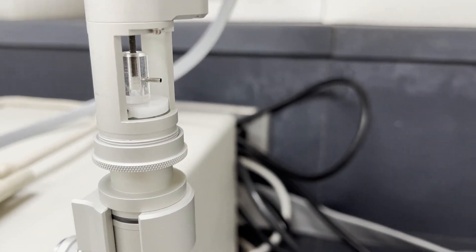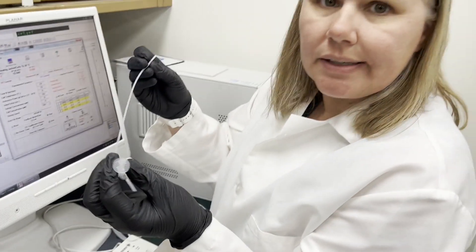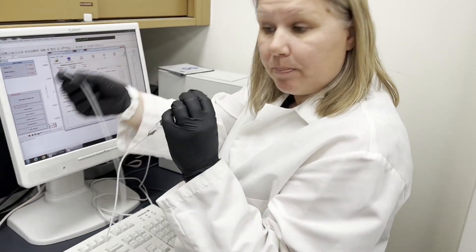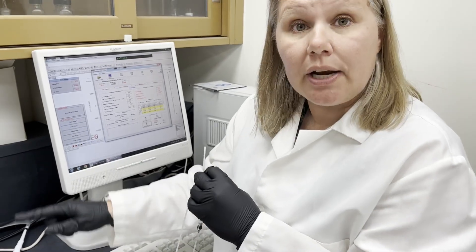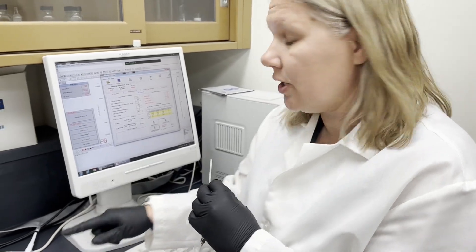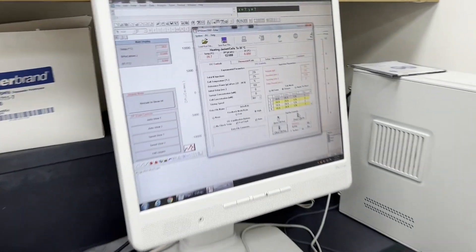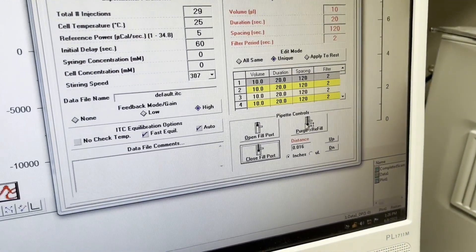If your sample is precious, which most likely it is, you can recover it by putting this back into an eppendorf or something. But to make sure there aren't any bubbles in the injection syringe, what you want to do is hit the purge refill button. So what this will do, it will push that teflon plunger down.